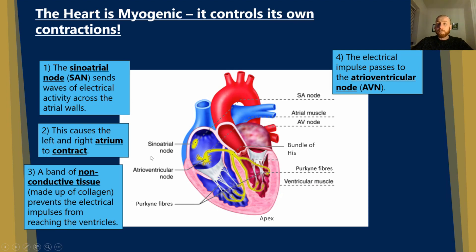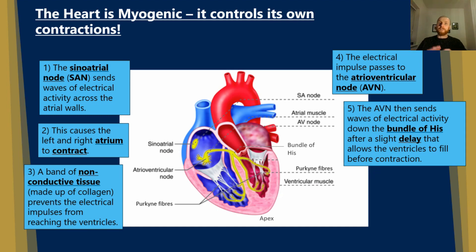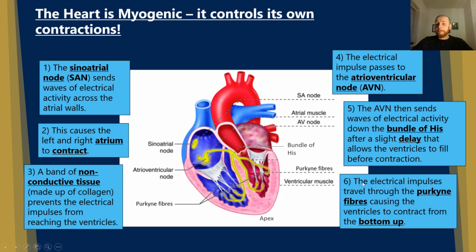Number four, the electrical impulse passes to the atrioventricular node, abbreviated as AVN. Number five, the AVN then sends waves of electrical activity down the bundle of His after a slight delay. That delay is so that the ventricles can fill up, because we don't want them contracting before all the blood is there. Number six, the electrical impulses travel through the Purkinje fibers, causing the ventricles to contract from the bottom up.